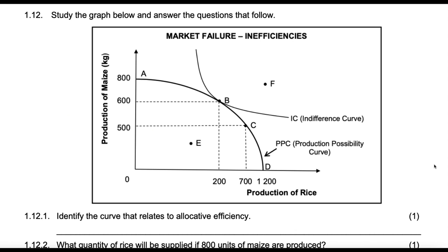Market failure is failure of markets to allocate resources at an optimum level. The markets have a tendency of undersupplying merit goods and oversupplying demerit goods. So for that, government should intervene in so many ways, discouraging the consumption of demerit goods, and also encouraging the provision and consumption of merit goods. Free operating markets will fail without government intervention because they don't really care about the social benefit or social cost that consuming any of this has.